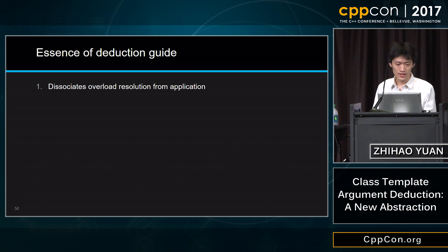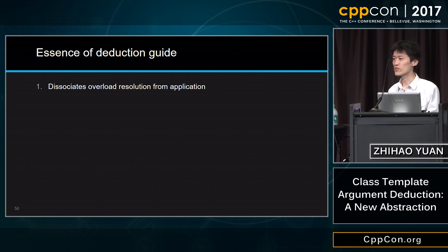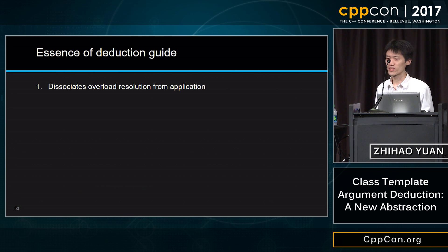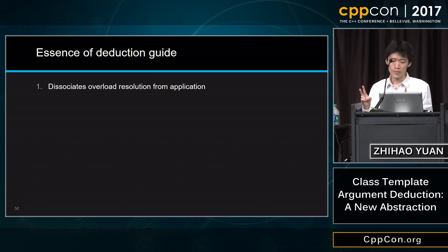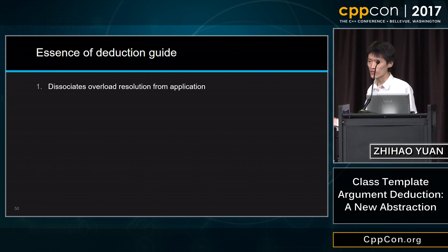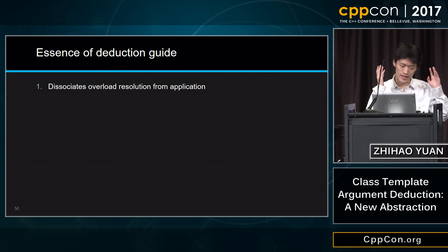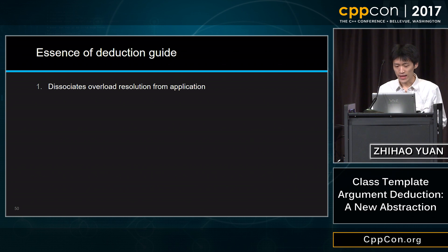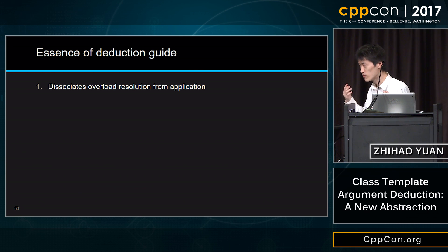Is it possible to suppress all automatic candidates? Yes. Step one: rename your existing class template parameter to something else. Step two: redefine it to `identity`. If you are unfamiliar with `identity`, it basically says 'put this type in a non-deduced context.' Therefore, all automatic deduction candidates are suppressed.